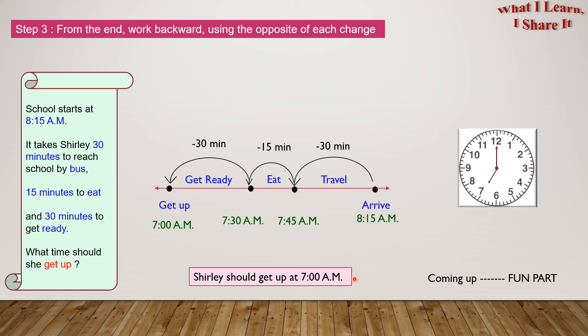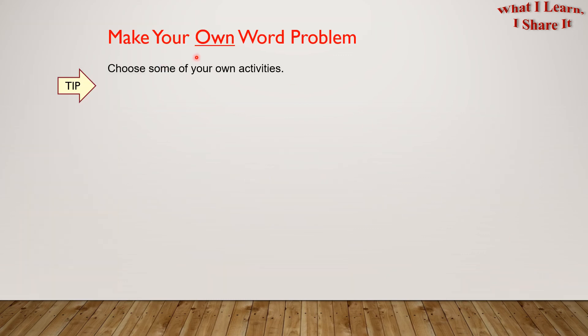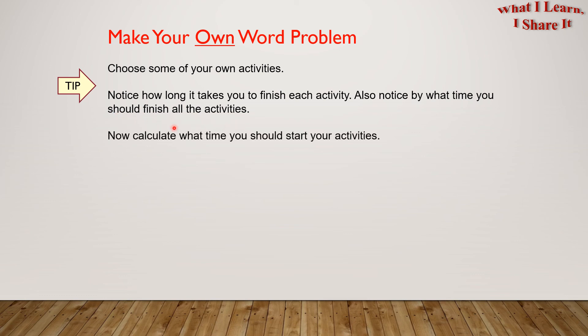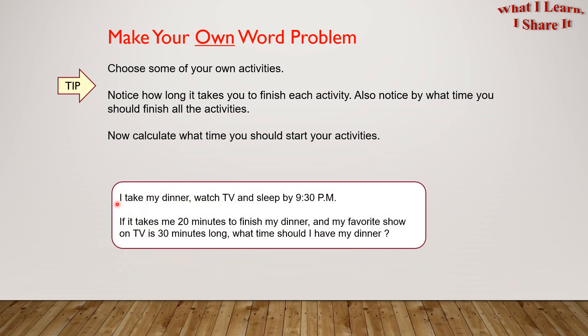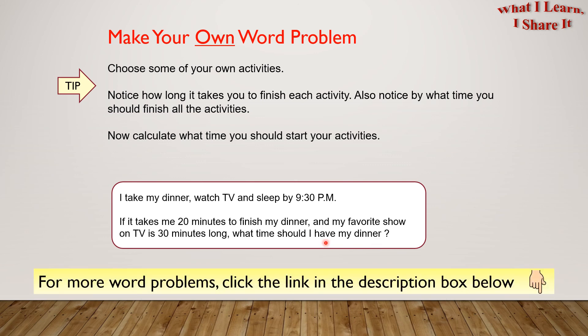Yay, we solved the problem! Coming up is a fun part: make your own word problem. Here's a tip. Choose some of your own activities. Notice how long it takes you to finish each activity. Also notice by what time you should finish all the activities. Now calculate what time you should start your activities. Here's an example. I take my dinner, watch TV, and sleep by 9:30 PM. If it takes me 20 minutes to finish my dinner and my favorite show on TV is 30 minutes long, what time should I have my dinner?